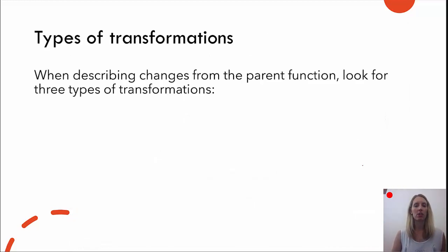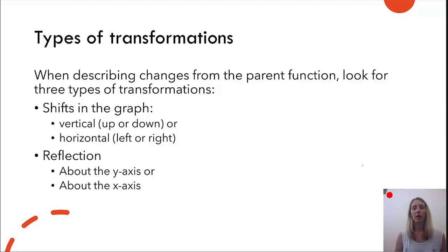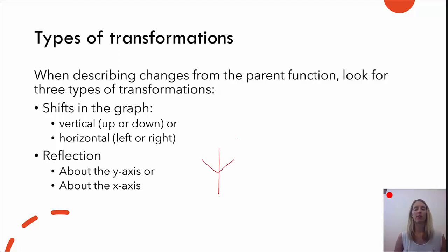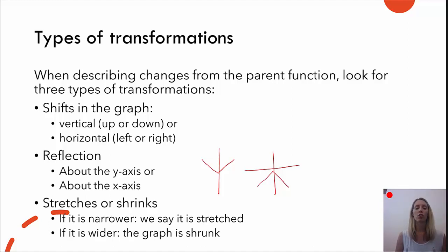So what do we look for when talking about transformations? There are three basic types of transformations. There are shifts in the graph: a vertical shift means the graph moved up or down; a horizontal shift means it's moving left or right. We also might want to look for reflections — a reflection about the y-axis or a reflection about the x-axis, such as if the absolute value opened downward instead of upward. And the trickiest to find are stretches and shrinks. If the graph is narrower, it's stretched. If it's wider, the graph has shrunk.